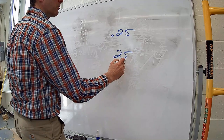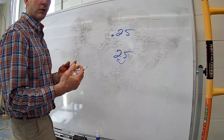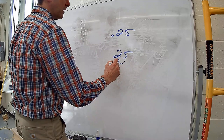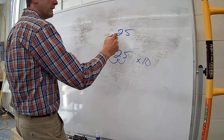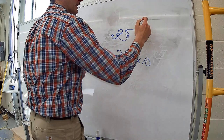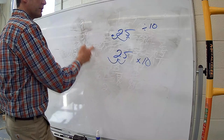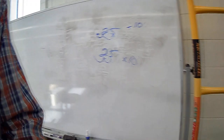If I have 0.25 and I have 25 — as I go to the left, every time I move one place value I'm going to multiply that number by 10. Every time we move to the right a decimal place, we're actually dividing by 10. So going left we multiply by 10; going right in the decimal system we are dividing by 10.